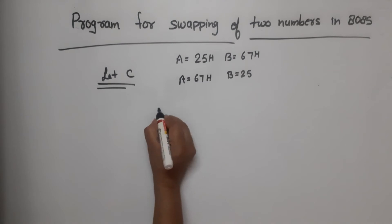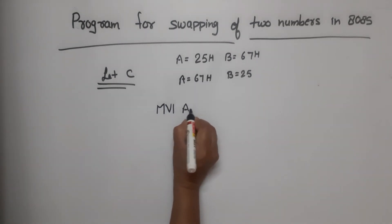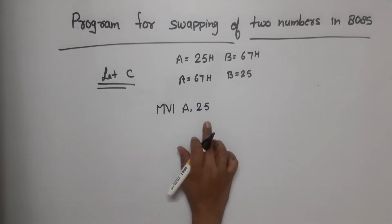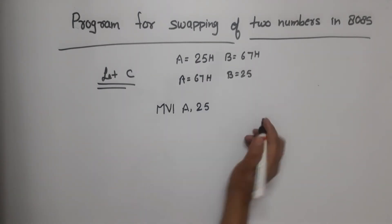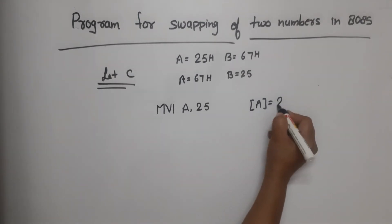First what we do? We have written MVI A,25. That means that if this line is executed, after execution of this line, what will be the content of accumulator? The content of accumulator will be 25.